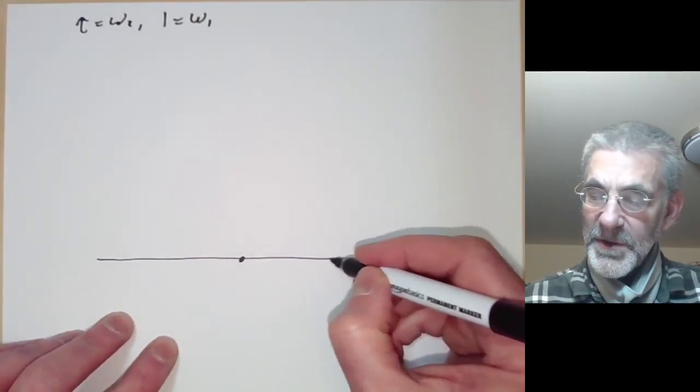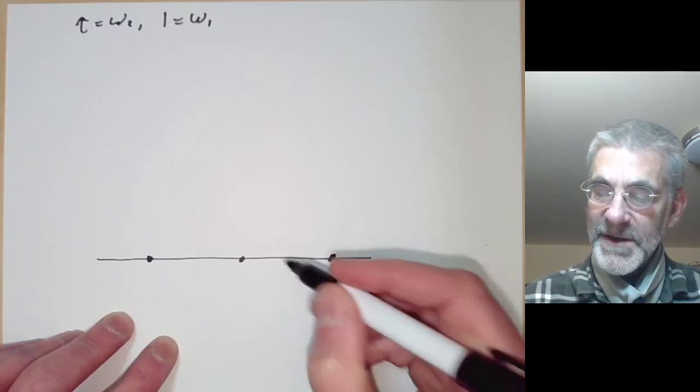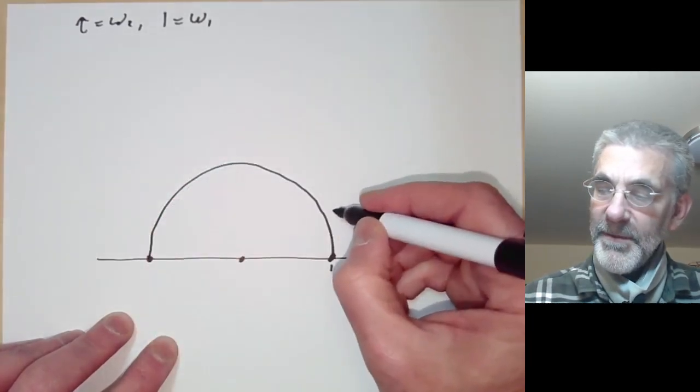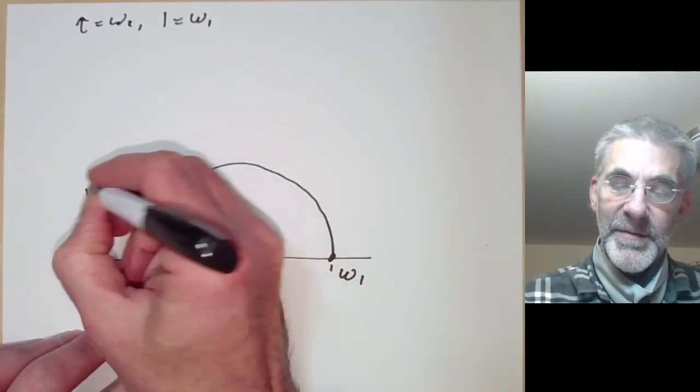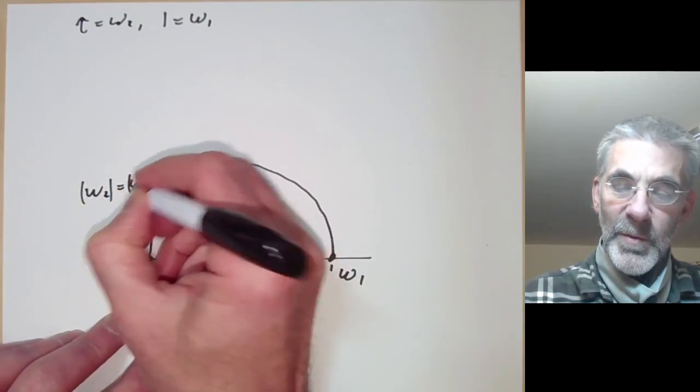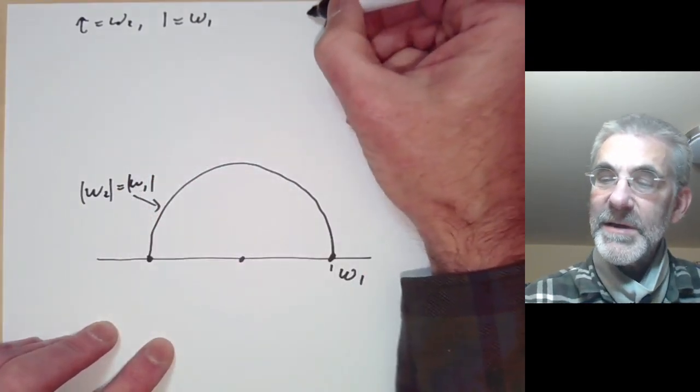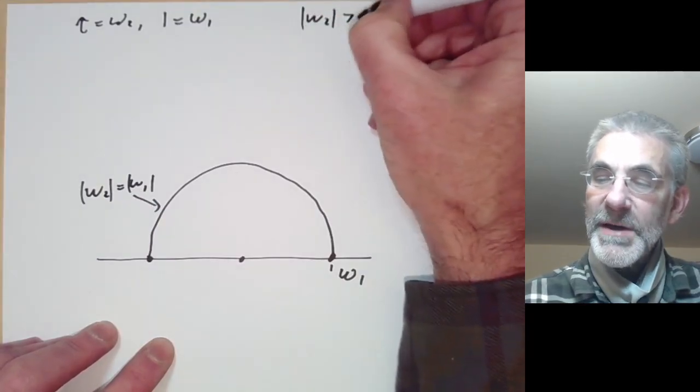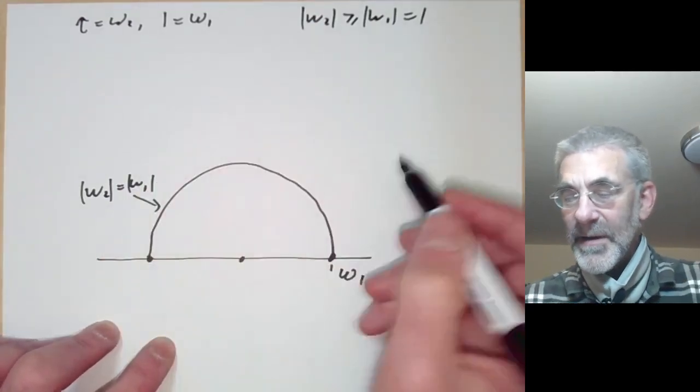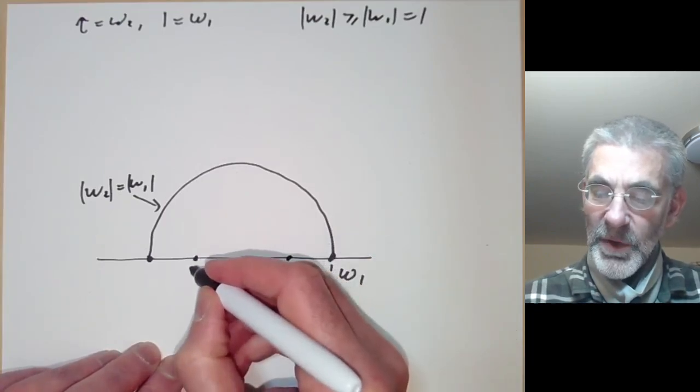And then we've got the following two conditions. So here's the point omega-1 of our lattice and now we look at this circle which says that omega-2 has absolute value equal to omega-1. And since omega-1 is the shortest vector, what we want is that omega-2 should be greater than or equal to omega-1 which is equal to 1. So omega-2 has to lie outside this circle in the upper half plane.